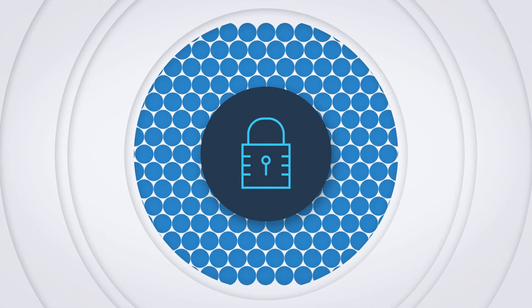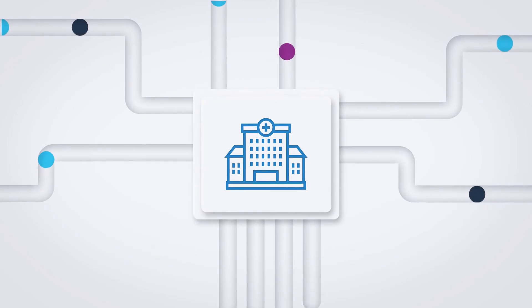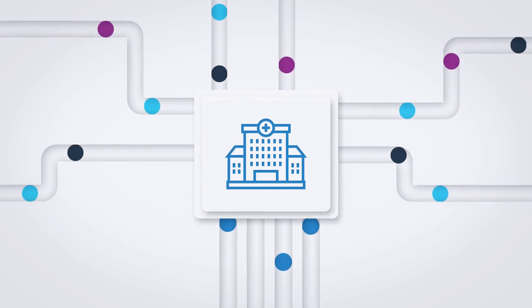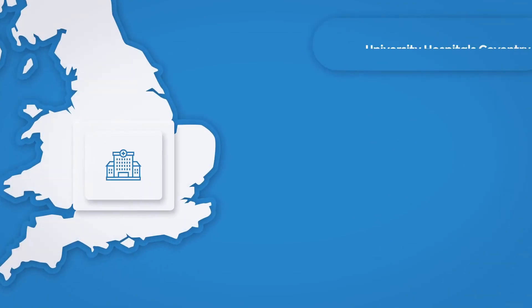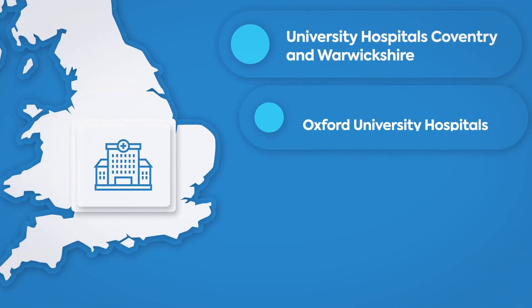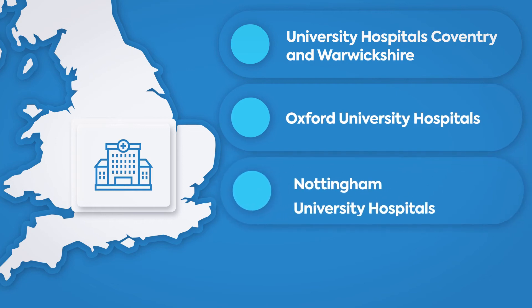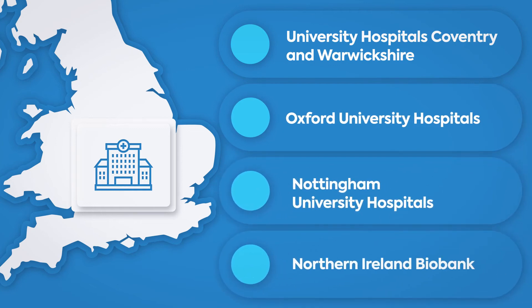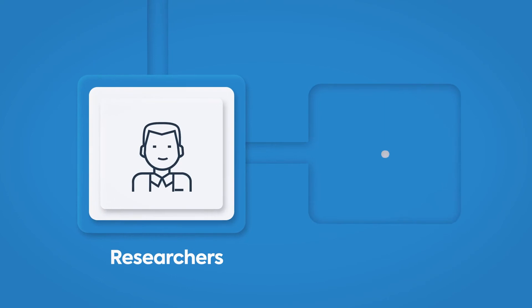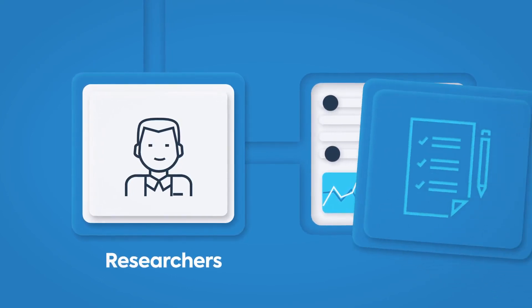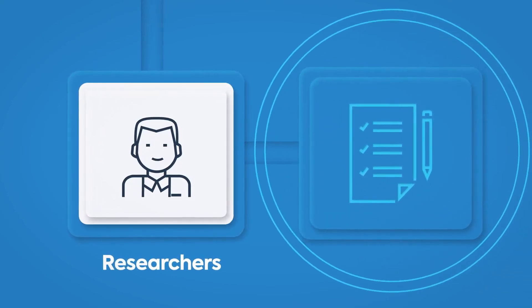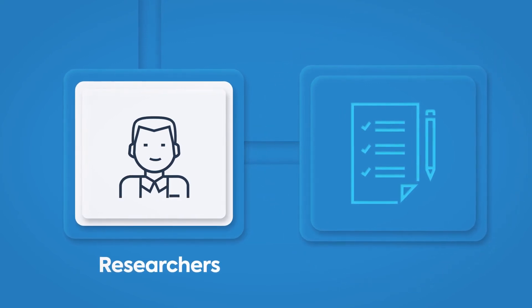So patient data is protected in two ways. At the stage it is collected from one of the NHS institutes that are participants in PathLake, it is de-identified. These participating institutes include University Hospitals Coventry and Warwickshire, Oxford University Hospitals and Nottingham University Hospitals. And when researchers apply to have access to it, there is a formal process for demonstrating a genuine medical benefit.